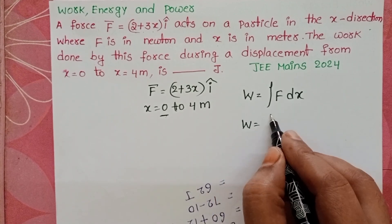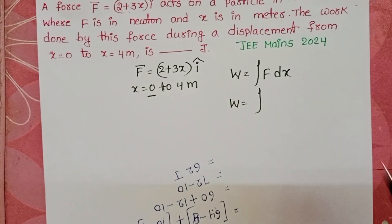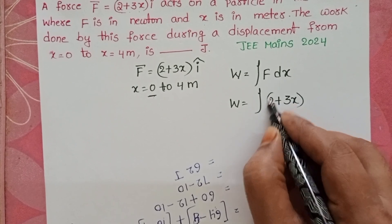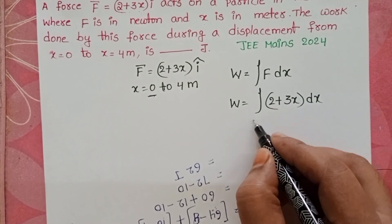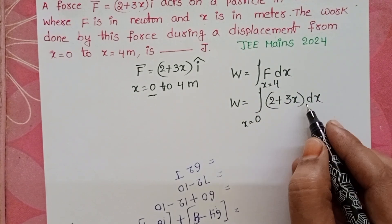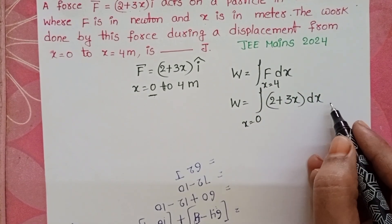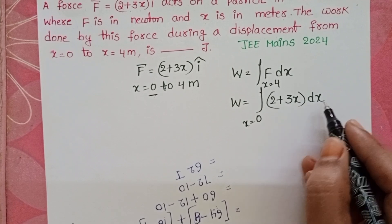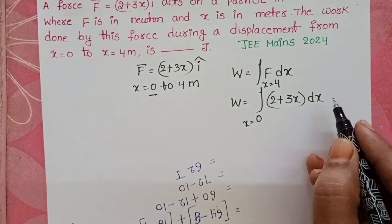Work equals the integral. In place of the force, substitute 2 + 3x into dx, and the limits from 0 to 4. Here, no need to take î because force and displacement both are acting in the same direction, that is the x-direction. î dot î equals 1.